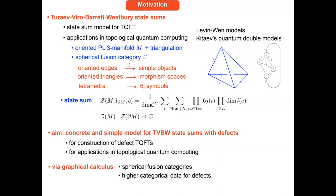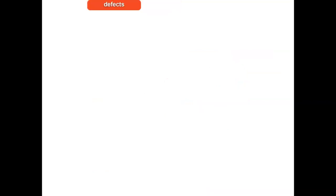The higher categorical data for the defects is essentially known from earlier work. There was work by Koralph and Virelizier and Balsam-Kirillov on line defects in such models, work by Kitaev and Kong in the context of Levin-Wen models that identified the defect data, and work by Fuchs, Schweigert and Schaumann on the modular functor constructed from bimodule categories. This tells one what the correct defect data is. There is also more recent work by Carqueville and Müller with similar defect data.